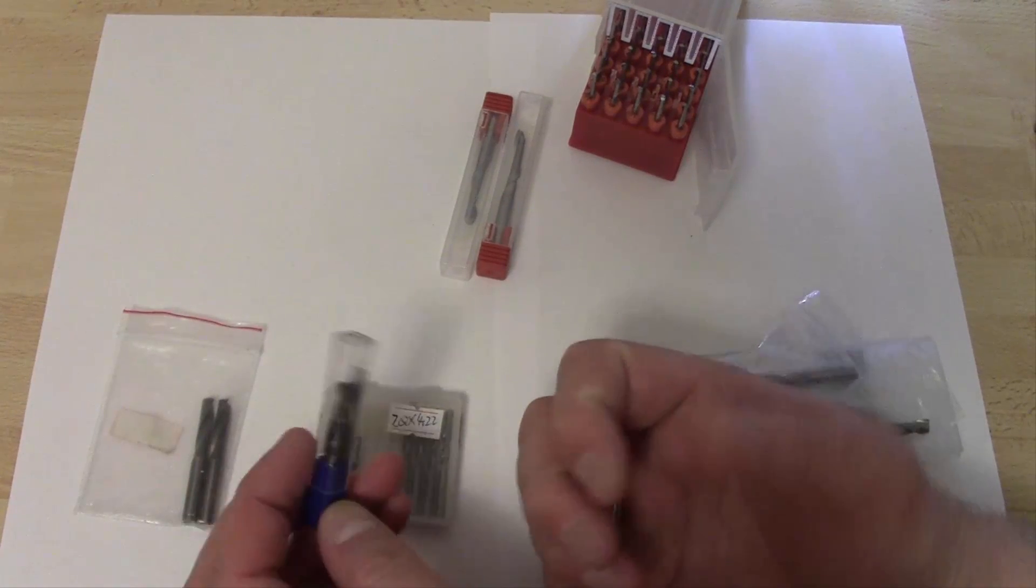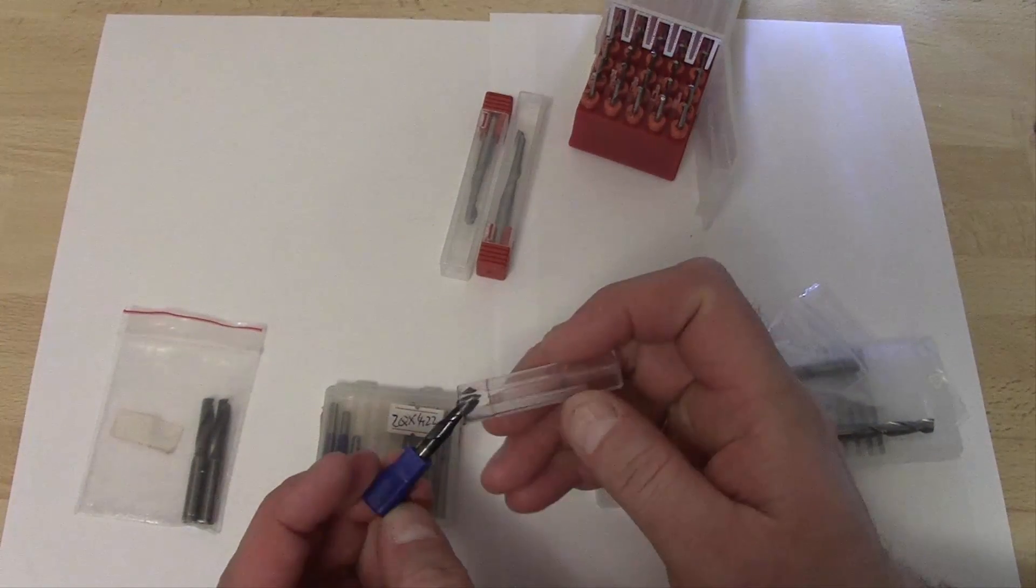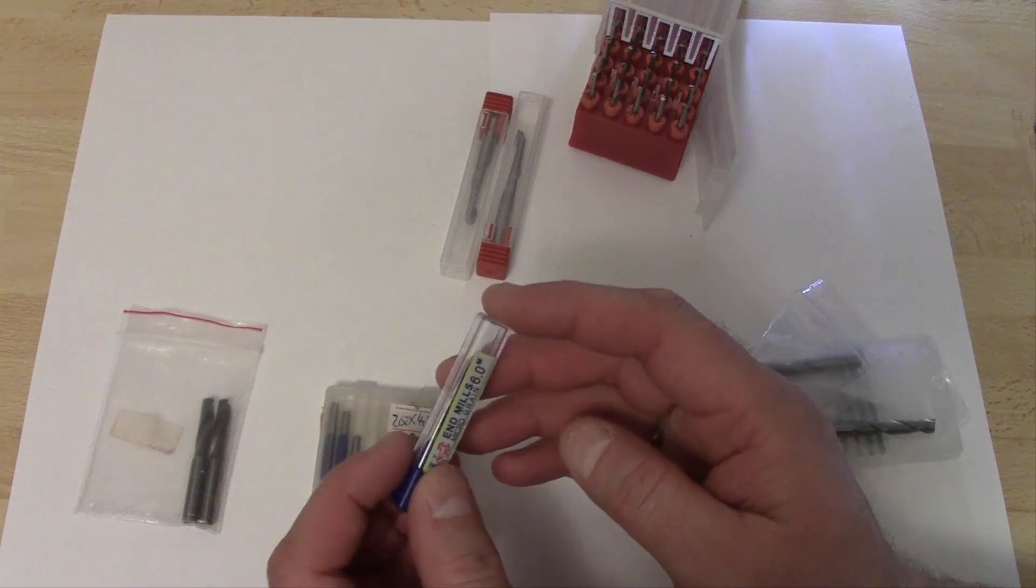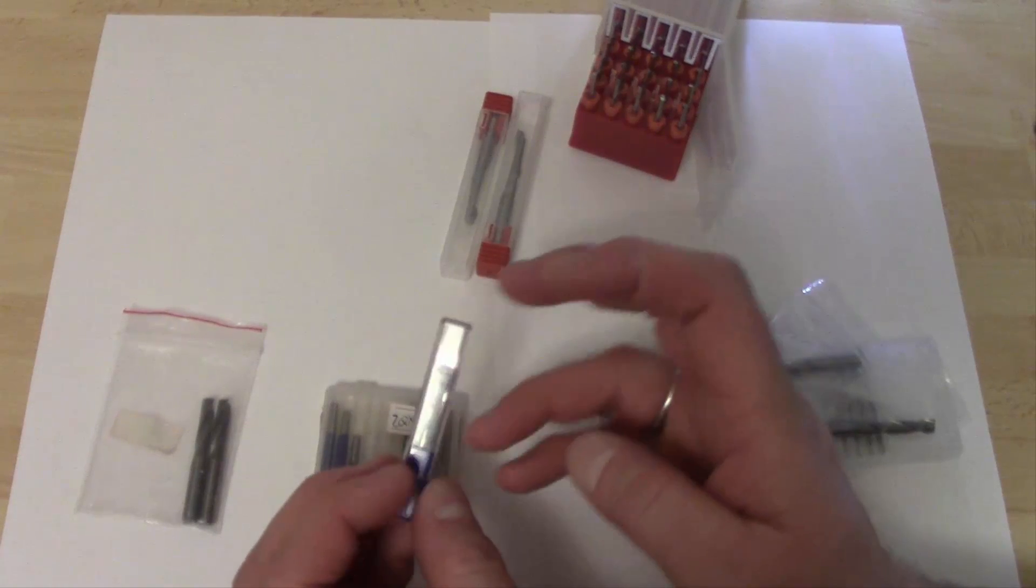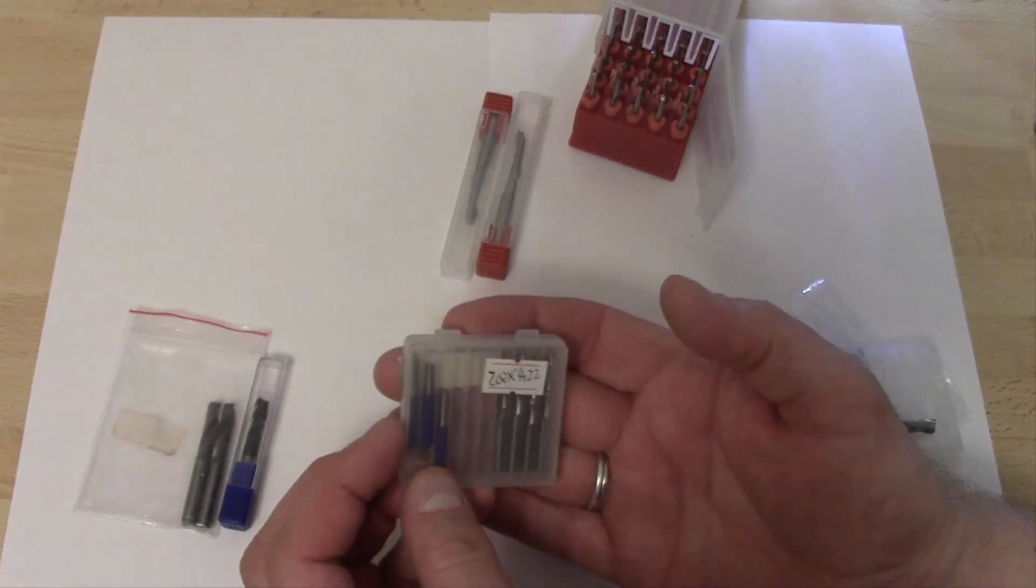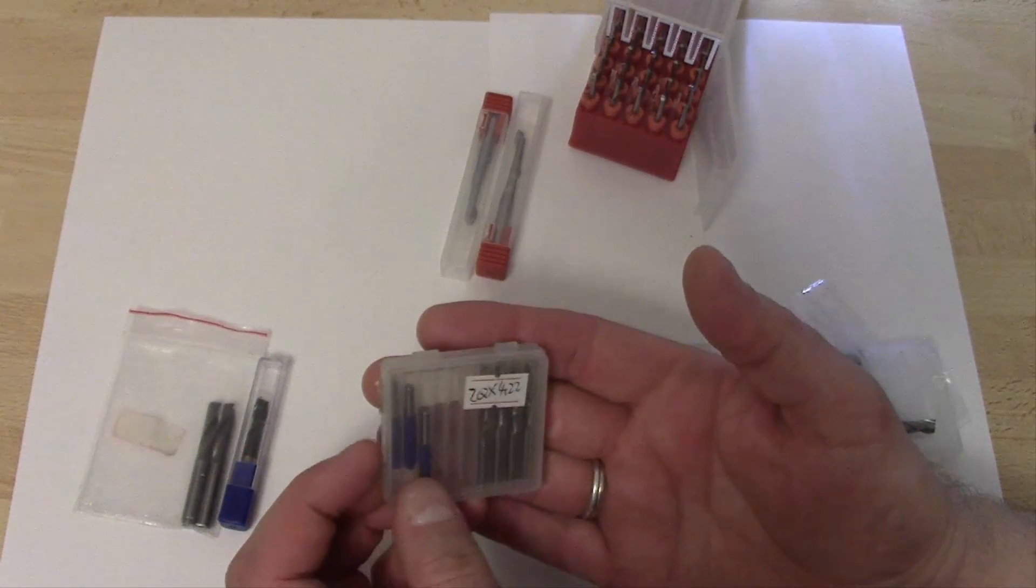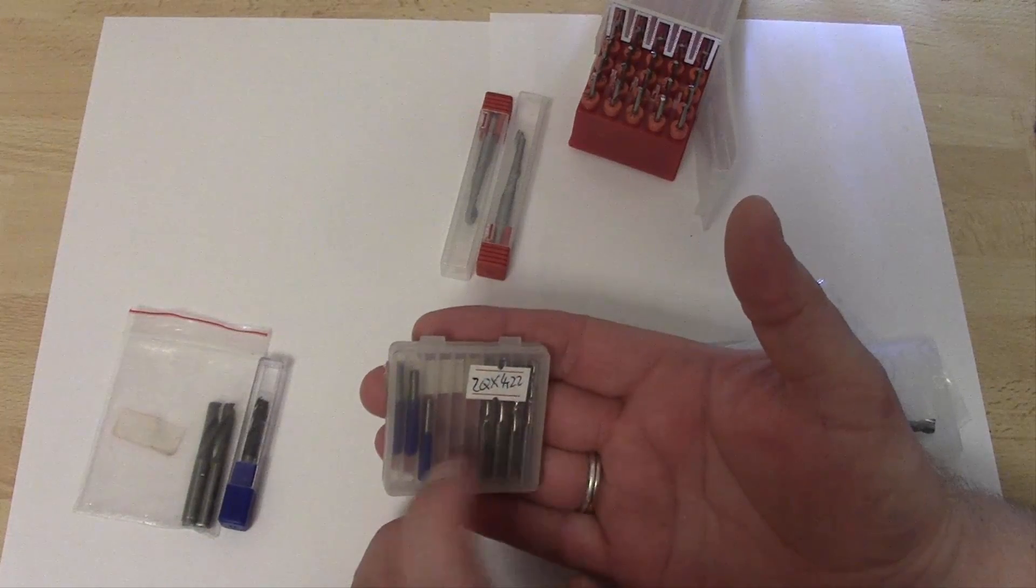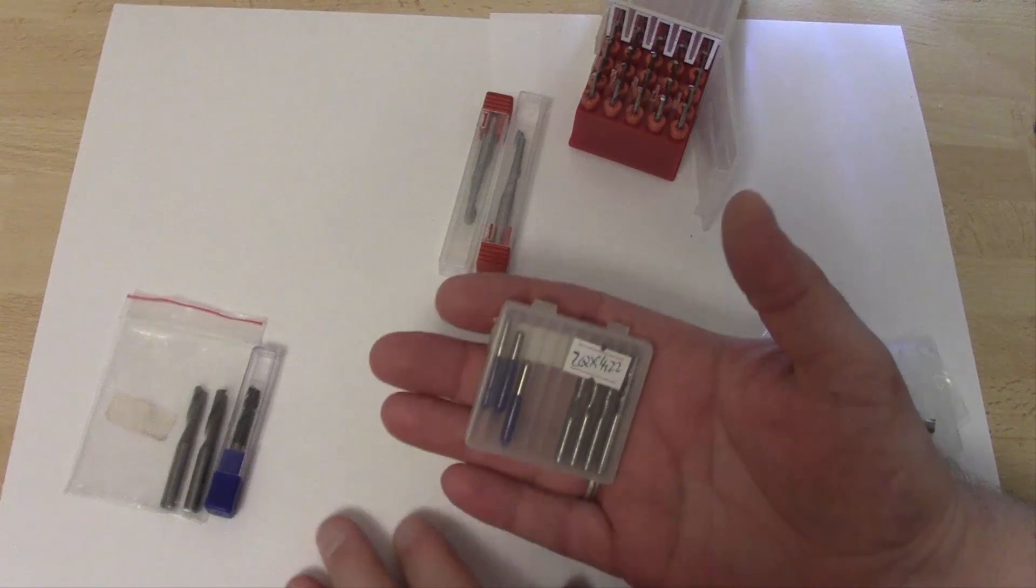And these ones, these are two flute end mills, but in a hard case, singly packed and with a coating, we'll come back to this also. These ones are in a hard case with 10 pieces. These are some ball end mills, but this is quite a good packaging here.